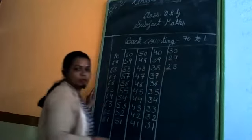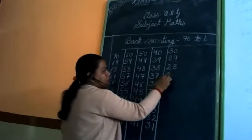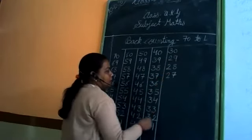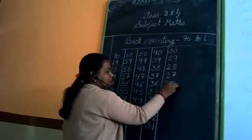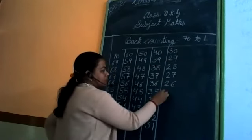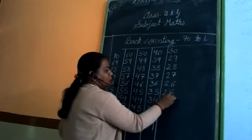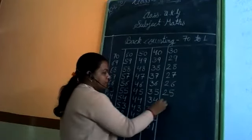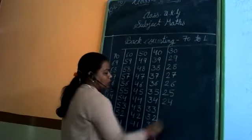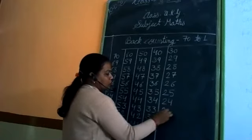30, 30. 29, 29. 29. 28, 28. 28. 27, 27. 26, 26, 26. 25, 25, 25.